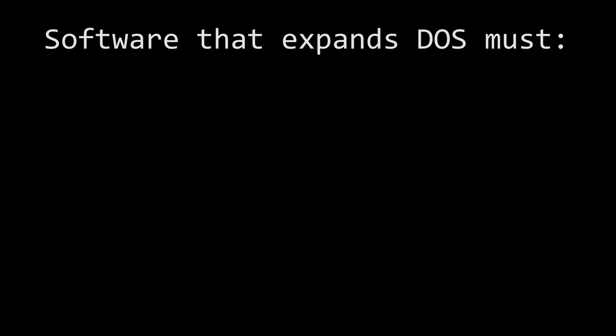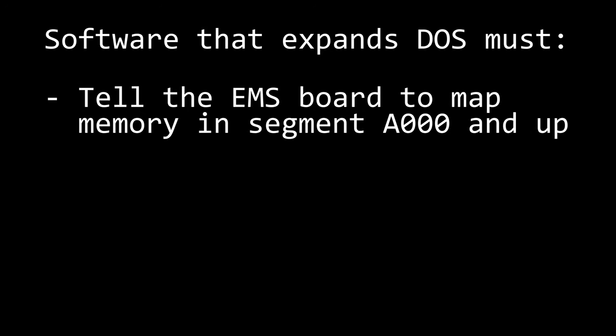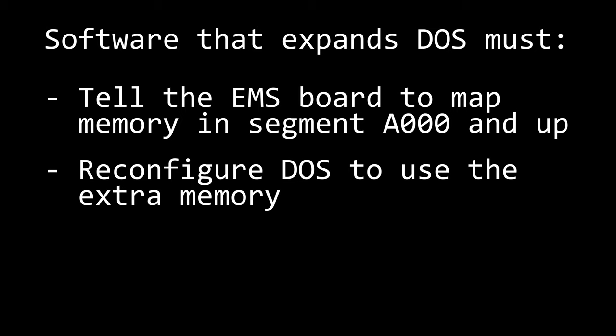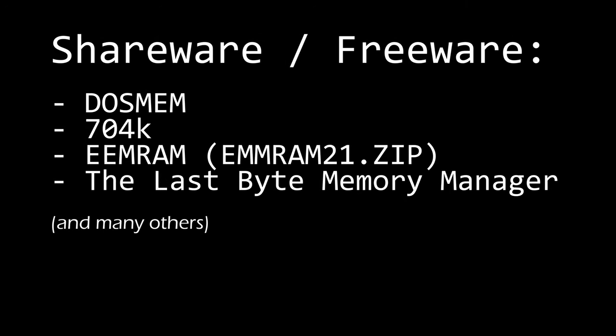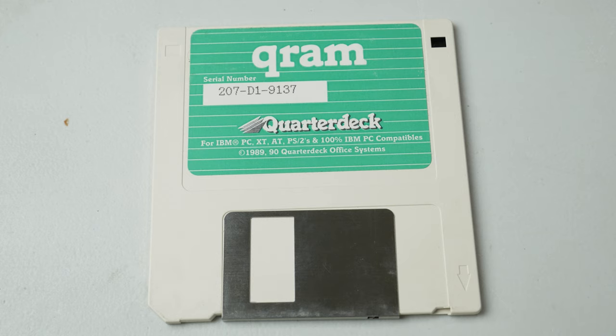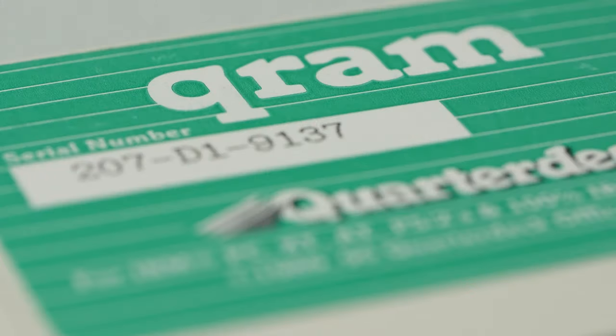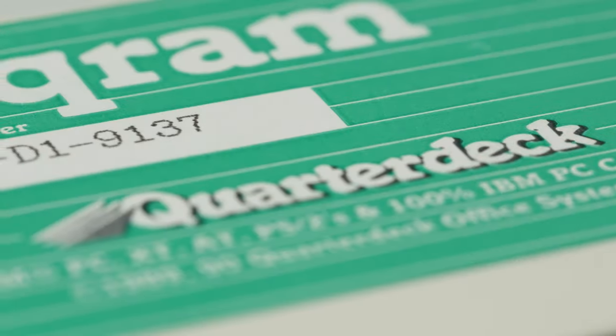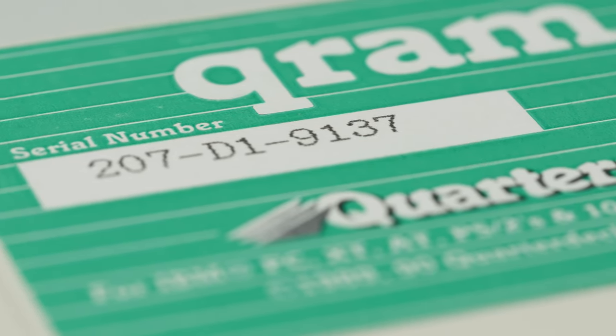We also need software that can do several things: tell the EMS board to put memory in segment A000 and higher, and reconfigure DOS to use the extra memory. This involves relocating data and rewriting the DOS memory chain to reflect the expansion, so we need special software. There are several old freeware and shareware packages that claim to do this, with names like DOSMEM, 704K, EEMRAM, and The Last Byte, but the only software that has ever worked 100% reliably for me is the old Quarterdeck commercial product Q-RAM. Q-RAM does all of the above on 8086 and 286 systems, and can even continue mapping EMS memory pages into unused areas above DOS, turning those areas into useful upper memory blocks.